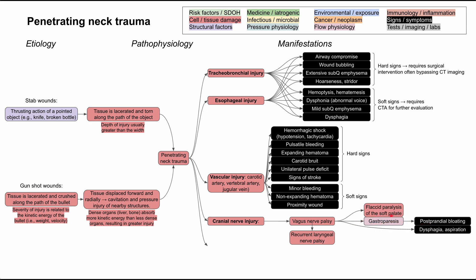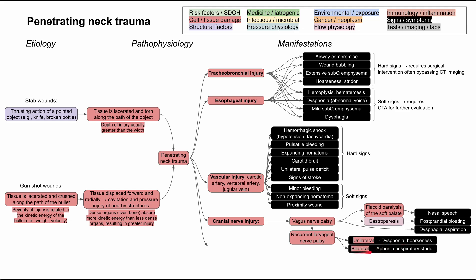The recurrent laryngeal nerve, a branch of the vagus nerve, can also be damaged. If one side is damaged — remember there are two, one on each side — you can have dysphonia, an abnormal voice or hoarseness. If both sides are damaged, you could lose your voice completely, resulting in aphonia and also inspiratory stridor.